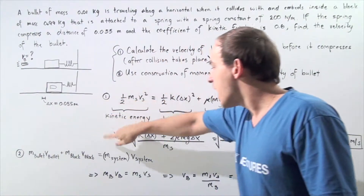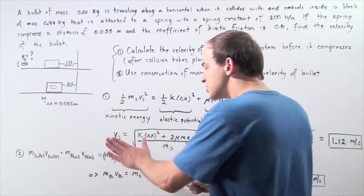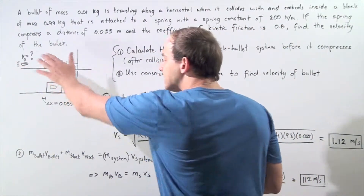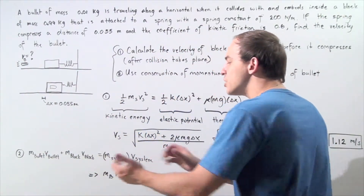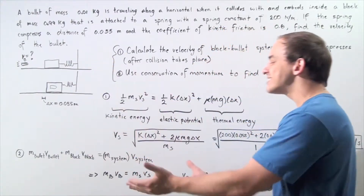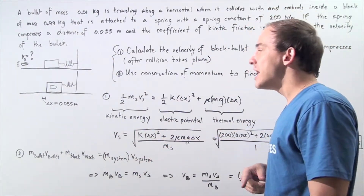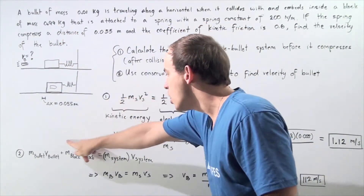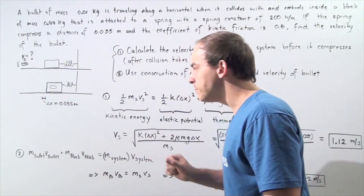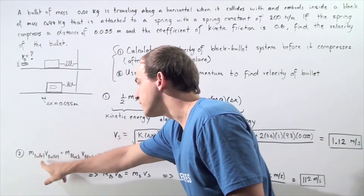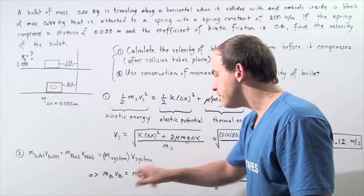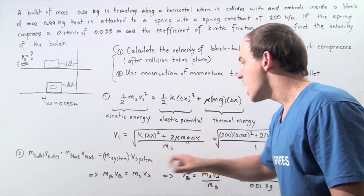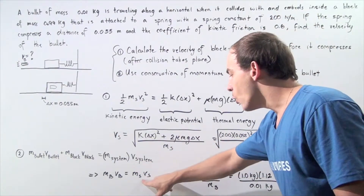Our conservation of momentum equation states that the sum of the momenta of the bullet and the block before the collision equals the sum of the momenta of the system after the collision. Before the collision, the block is stationary so its velocity is zero and that term cancels out. We are left with mass of the bullet times velocity of the bullet equals mass of the system ms multiplied by the velocity of the system vs.